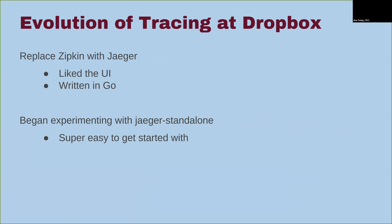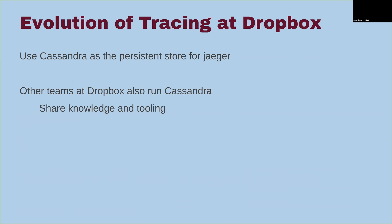Next, we replaced Zipkin with Jaeger. Our previous Zipkin implementation worked well enough, but we decided we liked the UI better with Jaeger. Also, since Go is a well-supported language at Dropbox, Jaeger being written in Go was a bonus because we could contribute if we wanted to. We started with Jaeger standalone, which made it easy to experiment and prove out the system. Once we had proved it out, we switched to using Cassandra as a backing store. Uber runs it with Cassandra, and a few teams at Dropbox also use Cassandra, so we could share operational knowledge.